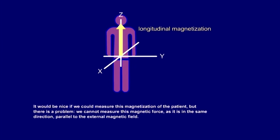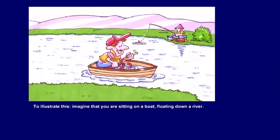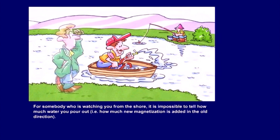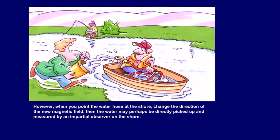It would be nice if we could measure this magnetization of the patient, but there is a problem. We cannot measure this magnetic force as it is in the same direction, parallel to the external magnetic field. To illustrate this, imagine you are sitting on a boat floating down a river, with a water hose in your hand squirting water into the river. For somebody watching from the shore, it is impossible to tell how much water you pour out — how much new magnetization is added in the old direction. However, when you point the water hose at the shore, changing the direction of the new magnetic field, the water may be directly picked up and measured by an observer on the shore.